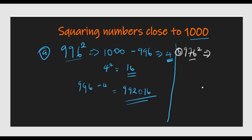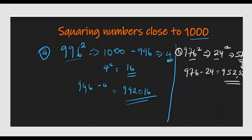In this case we have 24 squared, which is 576. The difference between 1000 and 976 is 24, so 24 is our difference. We square 24 to get 576 — that becomes the last part of the answer. Then we subtract: 976 minus 24 gives us 952.